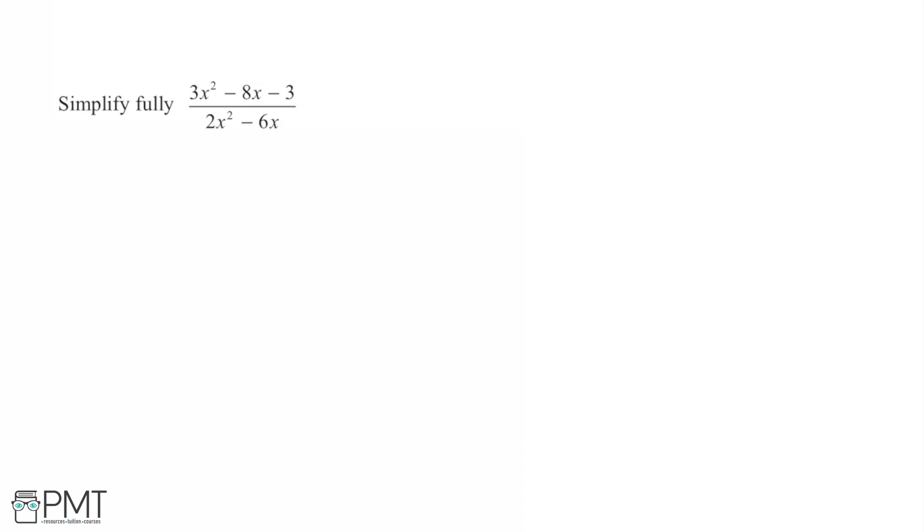When we're working with simplifying fractions like this, the first place to start is always going to be factorising out the numerator and denominator, and then seeing if we can cancel any of these brackets that we've created by factorising.